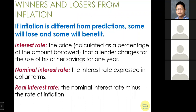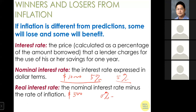The real interest rate reflects that the money used to service debt may become less valuable due to inflation — meaning the actual interest paid is lower in real terms. The real interest rate is calculated as nominal interest rate minus the rate of inflation. For example, if you borrow $10,000 at a 5% nominal interest rate and inflation is 5%, the nominal repayment is $500, but the real interest rate is zero percent.